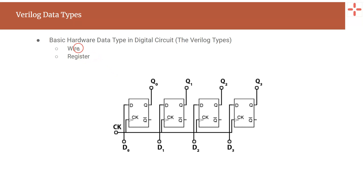A wire type doesn't have any storage capacity, but a register type had a storage capacity in them. That means by declaring a variable as a single bit register, you will be able to save a value into that register.